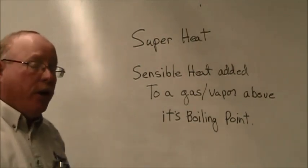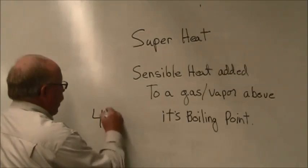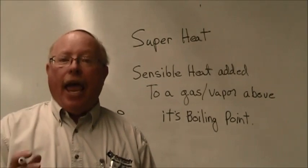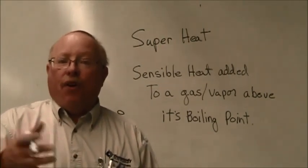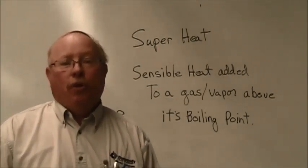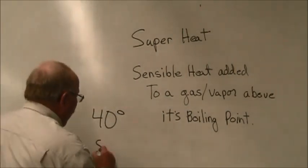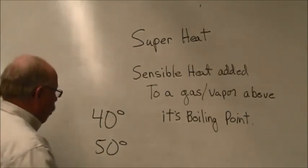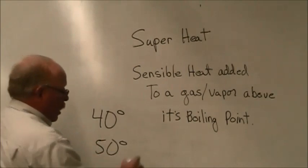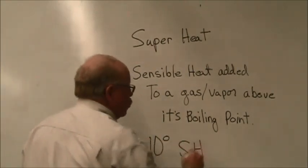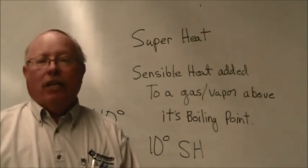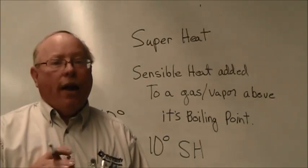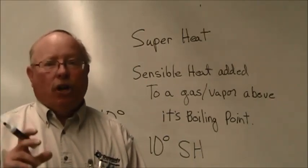So, if we have an evaporator and the evaporator is boiling the refrigerant inside of it at 40 degrees and after it boils off, if further heat is added to that refrigerant and it exits out of the evaporator at 50 degrees, we look at the difference between the two or 50 minus 40 is 10 degrees of superheat. In other words, the gas gained a temperature in sensible heat over and above its boiling point, 10 degrees.